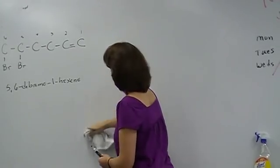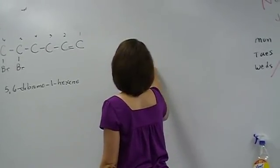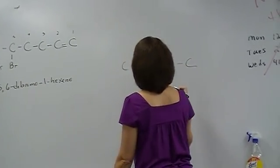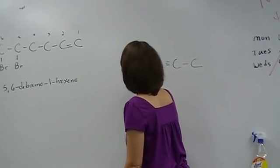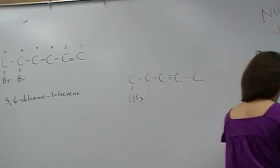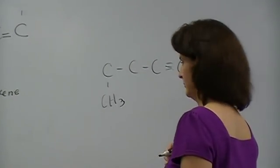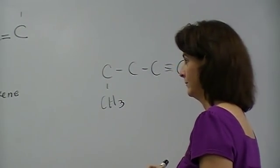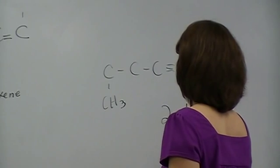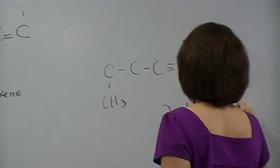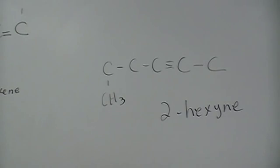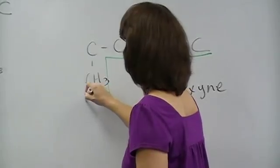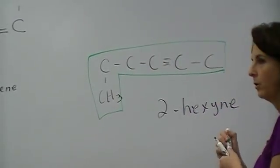So you know you have to start from the side that the thing is closest to. What if we had one, two, three, four, five, triple bond here. What do you think his name is? One, two, three, four, five. That's 2-hexyne. I was just doing a trick on you. Because you still have to go to the longest chain.